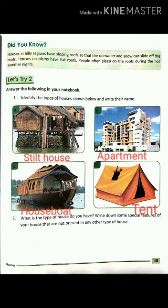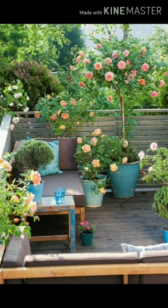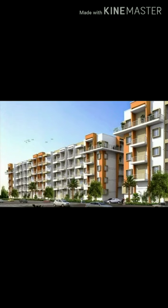Come to question number two: What type of house do you have? Write down some special features of your house that are not present in any other type. You have to mention whether you live in a big bungalow, small bungalow, a flat, or any other type, plus write special features. For example: 'My house has a beautiful terrace with a swing set where all my family members sit together,' or 'My house has a beautiful garden where I love watering plants,' or 'I live in a flat on the second floor with one flat below and two flats above.' I hope you understand how to write your answer.